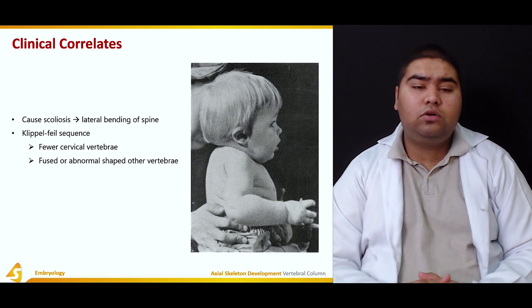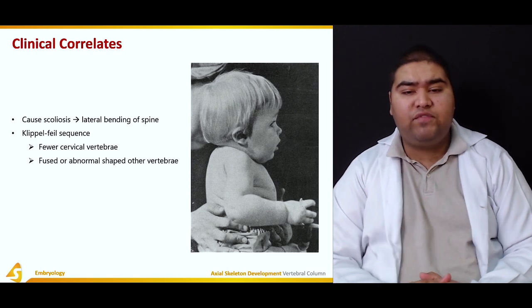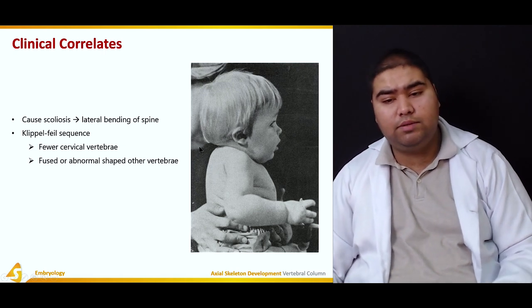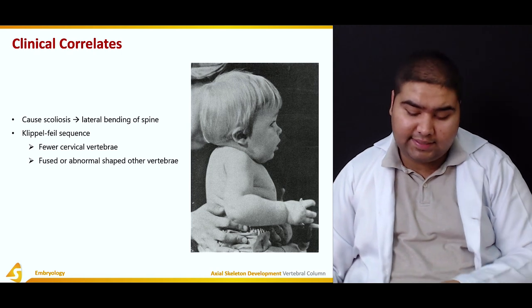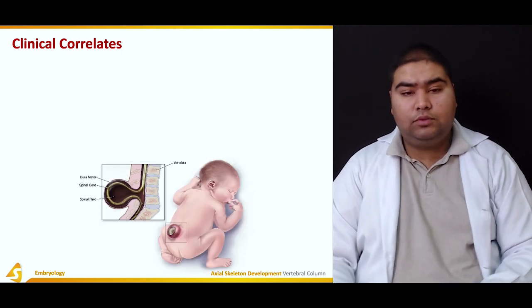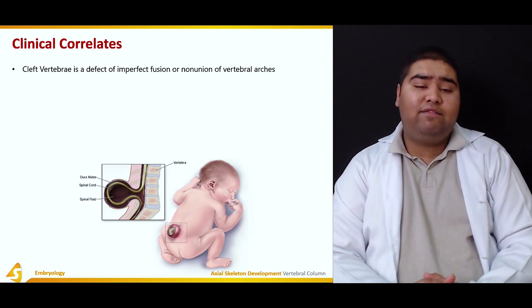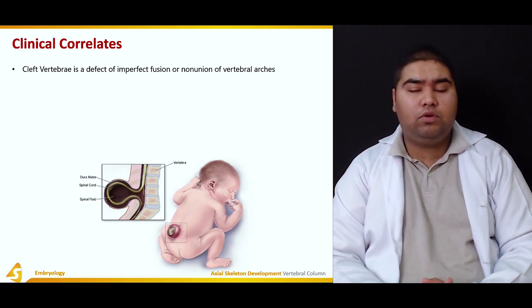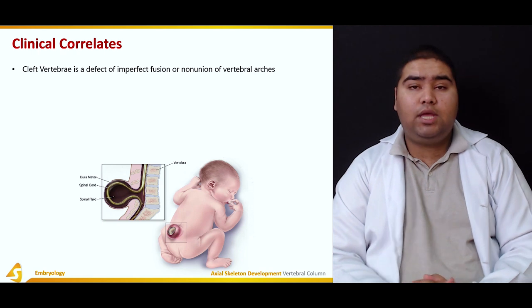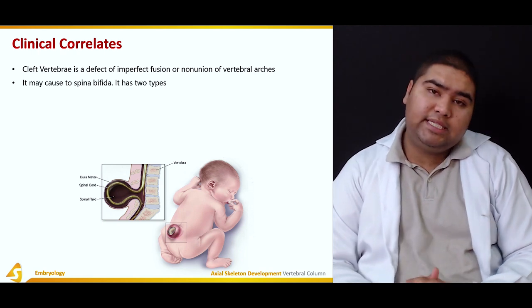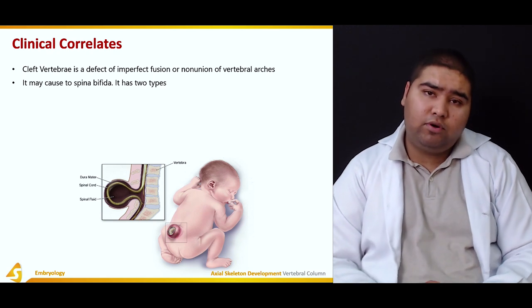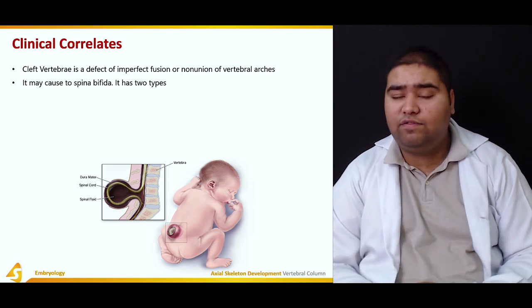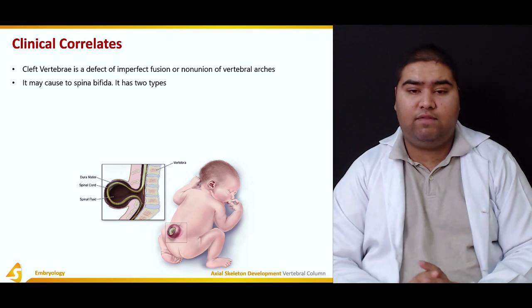Defects in vertebral formation can also cause Klippel-Feil sequence, in which there are fewer cervical vertebrae — as seen in the affected child — and fused or abnormally shaped vertebrae may also be present. Cleft vertebra is a defect of imperfect fusion or non-union of the vertebral arches. This may cause spina bifida — a very important clinical correlate that must be learned, as you will see patients with this condition.